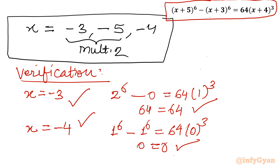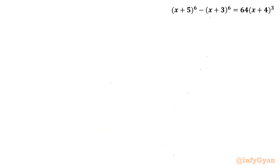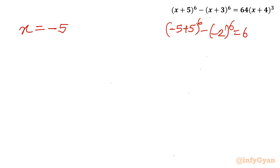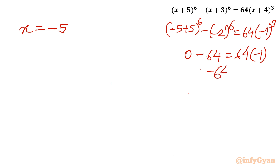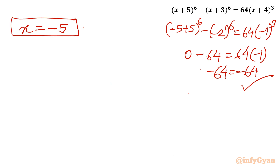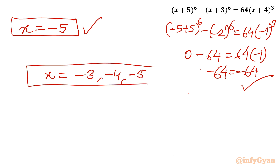Now let us consider x = -5: left side is (−5+5)⁶ − (−5+3)⁶ = 0 − (−2)⁶ = −64. Right side is 64·(−5+4)³ = 64·(−1) = −64. So −64 = −64. This is also verified. The ultimate solution is x = -3, -4, -5. I hope this video will be somewhere meaningful to you. Do not forget to like, share, and subscribe. Bye-bye till next video. Good luck and take care of yourself.